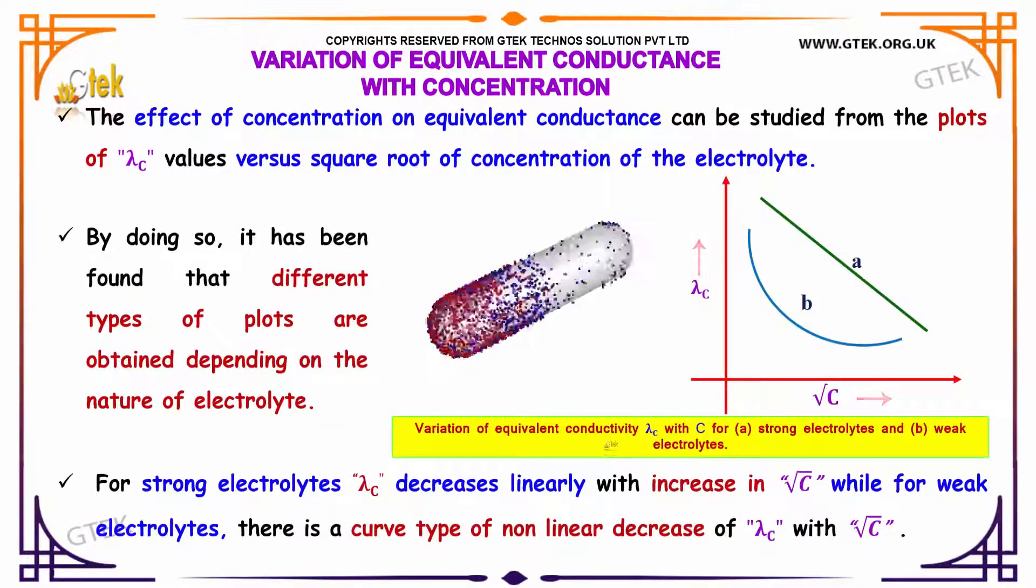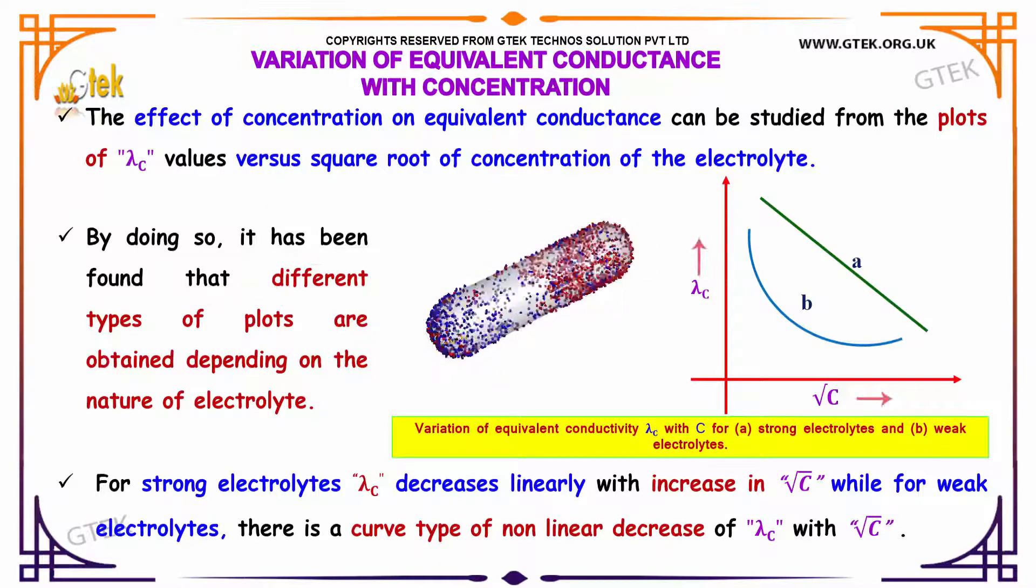Let us now discuss the variation of equivalent conductance with concentration. The effect of concentration on equivalent conductance can be studied from the plots of lambda c values versus square root of concentration of the electrolyte.